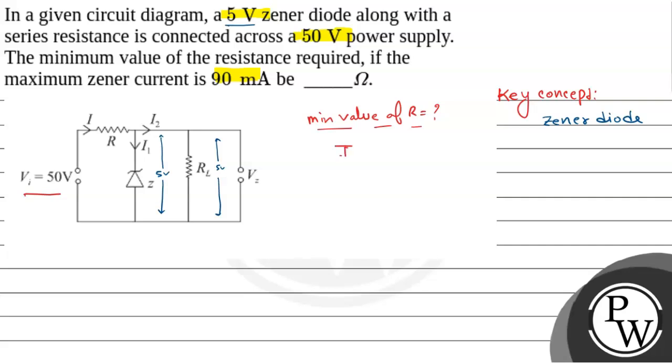So maximum Zener current, that is I1 max, is given as 90 milliampere. Now here, the voltage across R is 45 volt. So I equals V by R, that is 45 by R.